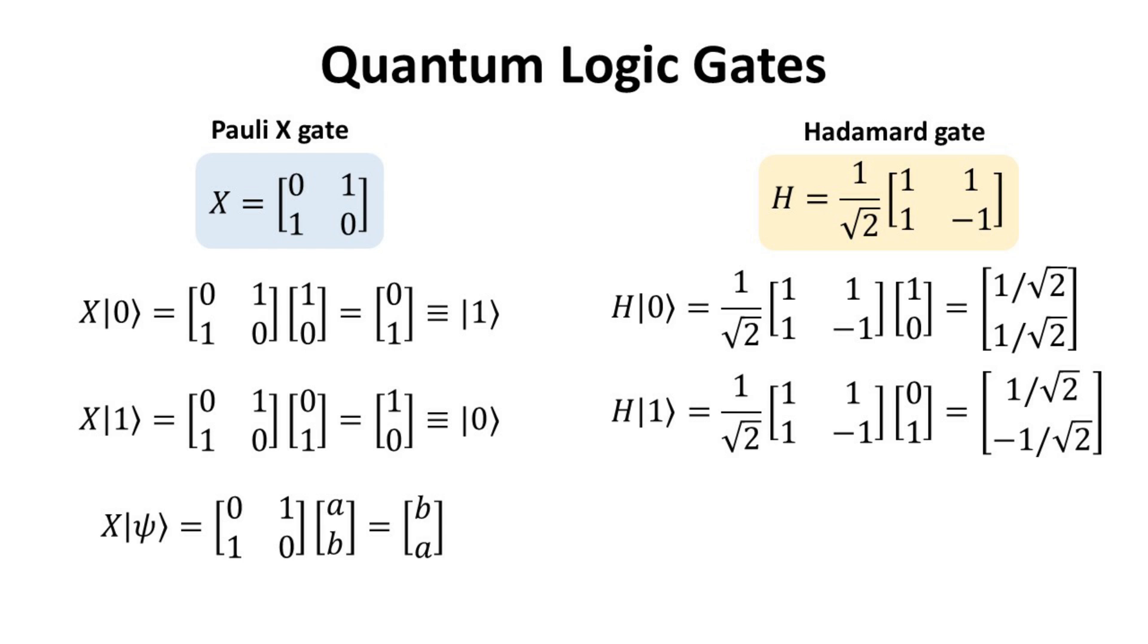The Hadamard gate, H, on the other hand, when applied to the 0 ket, creates a superposition state with equal amplitudes for 0 and 1 kets. The same happens when the H gate is applied to the basis state 1, except now with a relative minus sign in one of the amplitudes. When the H gate acts on a general qubit psi, it mixes the components to be an equal weighted sum or difference of the two, as shown.